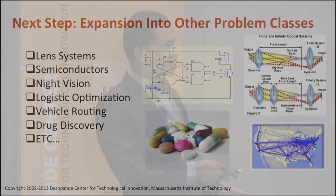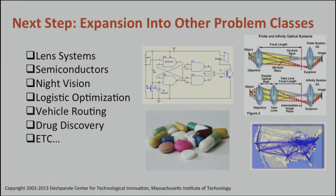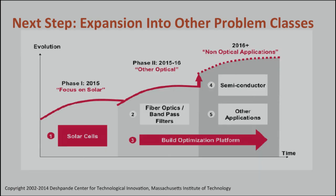Solar energy and optics is not the only place where people are interested in optimizing things. You can think about drag design, lens systems, routing, semiconductors — the list goes on and on. We hope to spend the next couple of years exploring optics and solar, and continue our expansion into other problem classes with time.